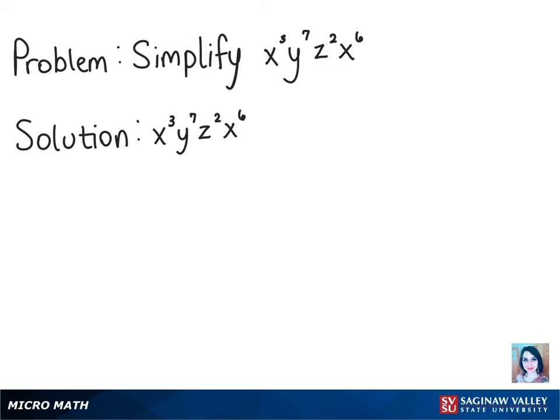Okay, so to simplify this problem, we want to first look at the fact that there are three different variables: x, y, and z, but we can see that x is written twice in two different places, so we want to combine those.